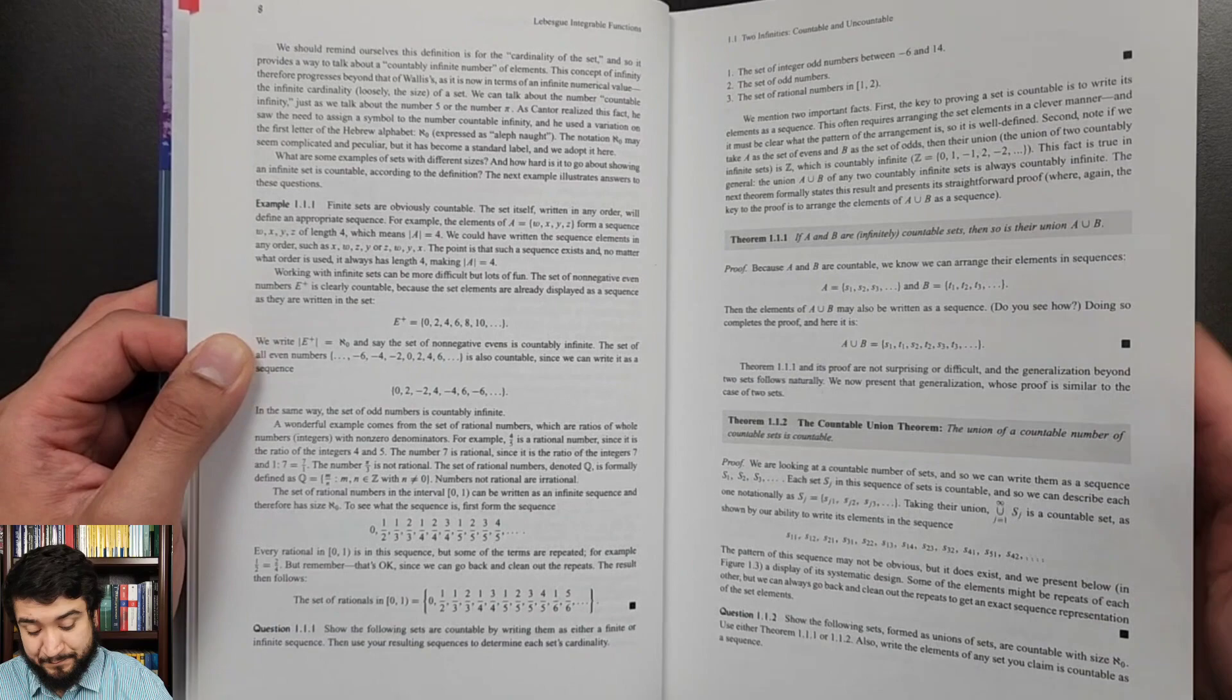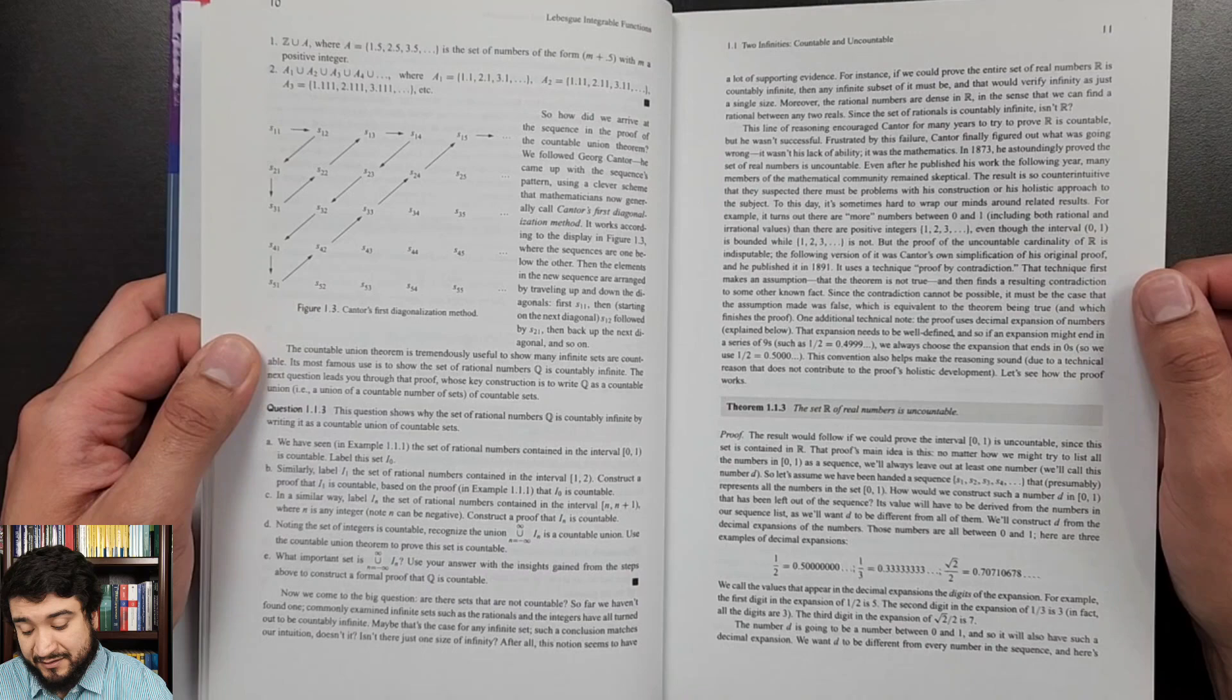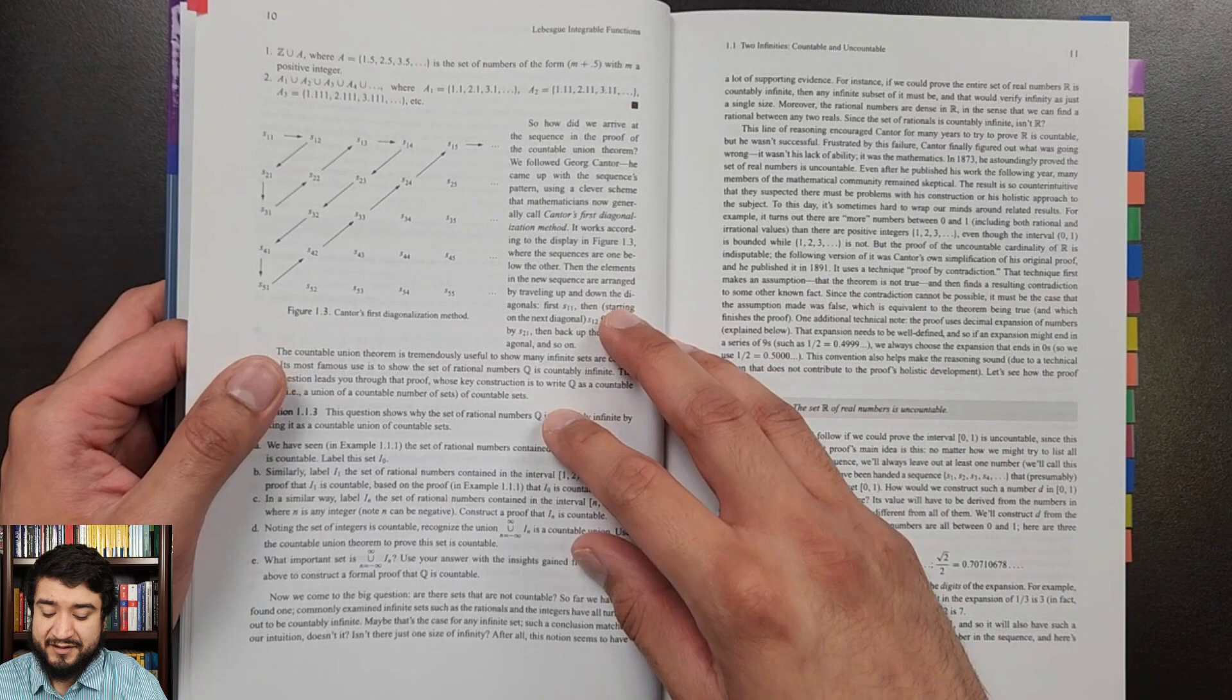The proofs here are very simple to read. I don't think I mentioned the prerequisites. I would say if you have Calculus 2, which is the official prerequisite, that's sufficient. If you've taken a course on introduction to proofs, you'll be slightly better suited to read this book, or maybe a course on discrete math.